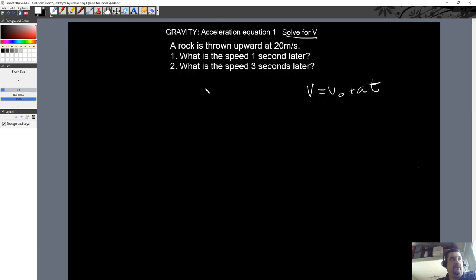So a rock is thrown upward at 20 meters per second. So we know the initial starting velocity is going to be 20 meters per second. That's positive. Anytime you throw something, drop it, it falls, whatever, we automatically know that a is negative 9.8 meters per second squared.